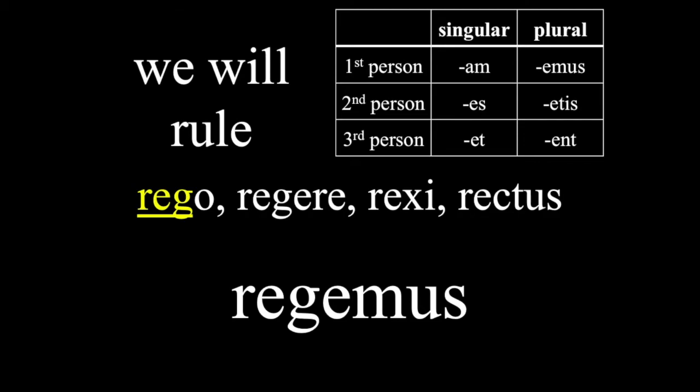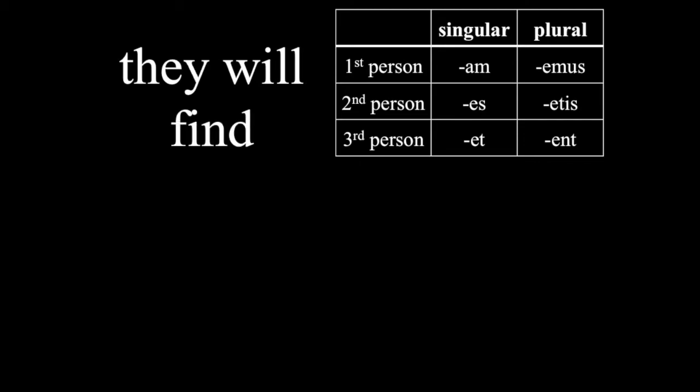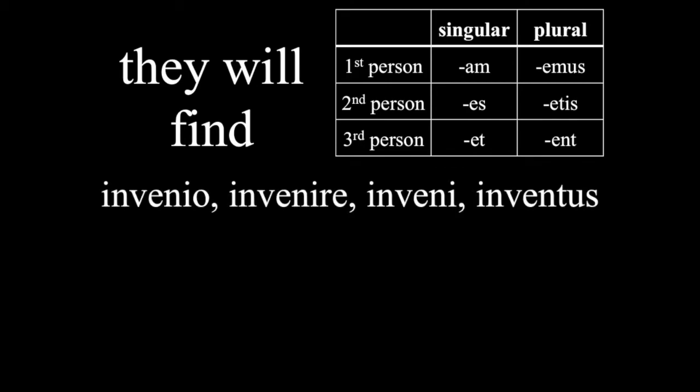All right, next. They will find, the verb is invenio invenire, so the Latin form is invenient. We dropped off the O and added ENT.